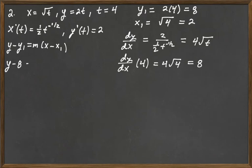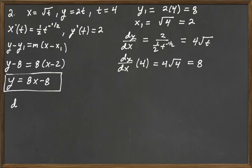So y minus 8 equals 8(x minus 2), which simplifies to y equals 8x minus 8. That's the equation of the tangent line when t equals 4, specifically at the point (2, 8).